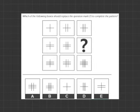Which of the following boxes should replace the question mark to complete the pattern? So we have a nine figure matrix here and we have to use the information to help us find our missing ninth figure.